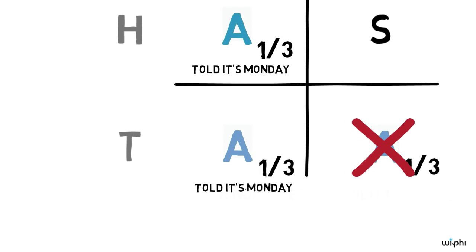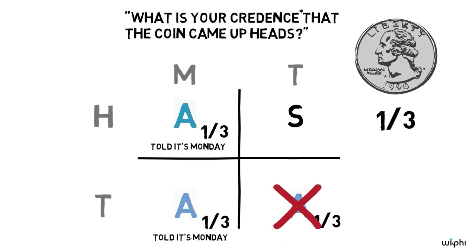Given that the coin is fair and the coin will be tossed after sleeping beauty goes to sleep again on the Monday, shouldn't she think that the probability that the coin will come up heads is one half? Well, it seems so.